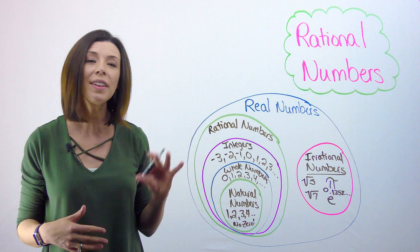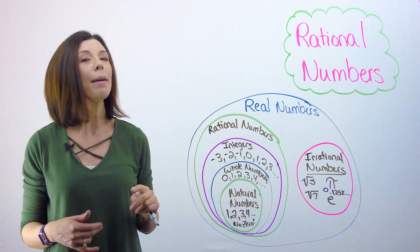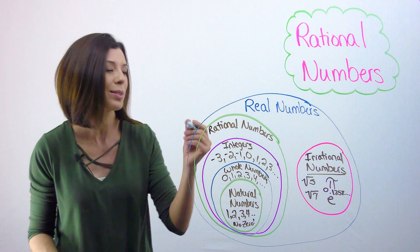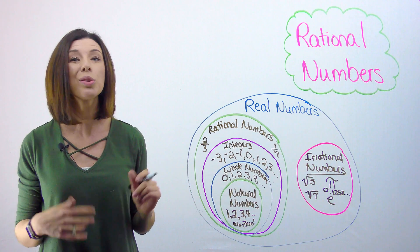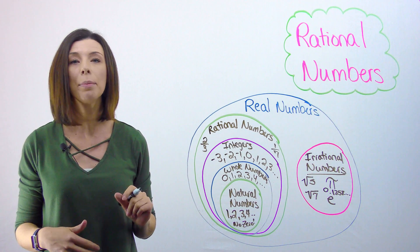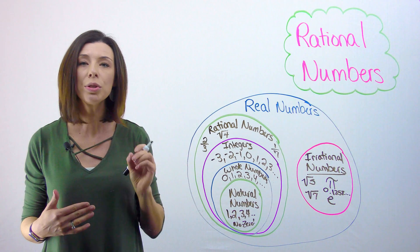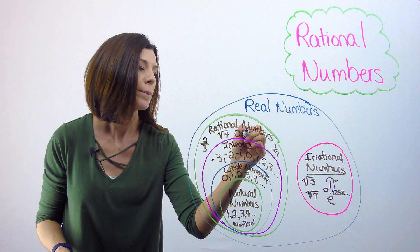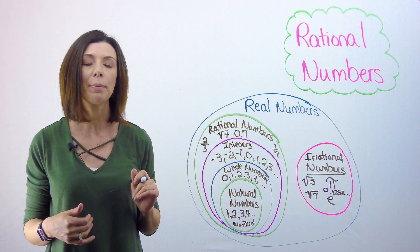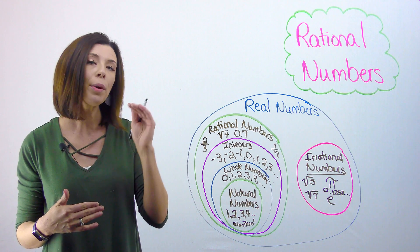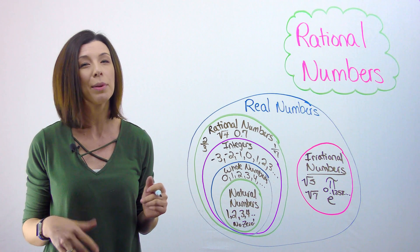Now we consider all the other rational numbers that don't fit into those categories. Fractions go into rational numbers. Square roots that do end are rational — for instance, the square root of 4 equals 2, so that's rational. All decimals that terminate are rational numbers. However, there's a caveat: repeating decimals are also considered rational. For instance, 0.3333... going on forever would be considered rational, even though it's a decimal that doesn't end.